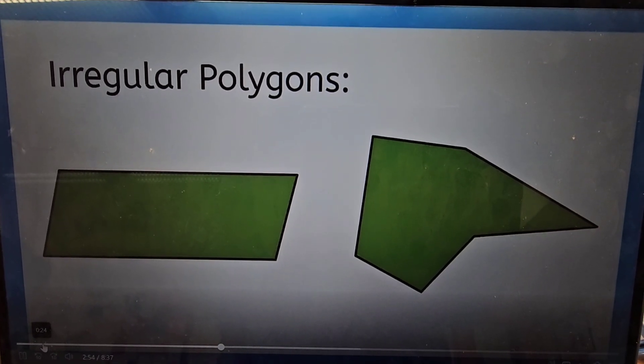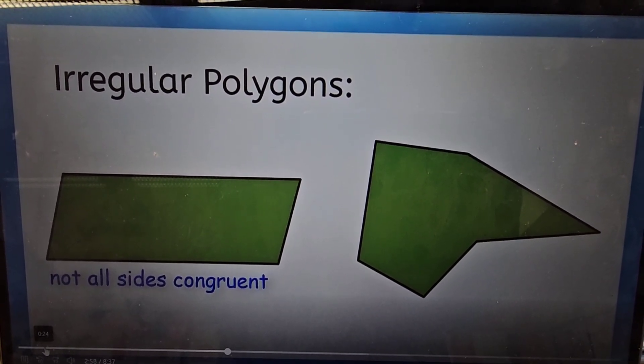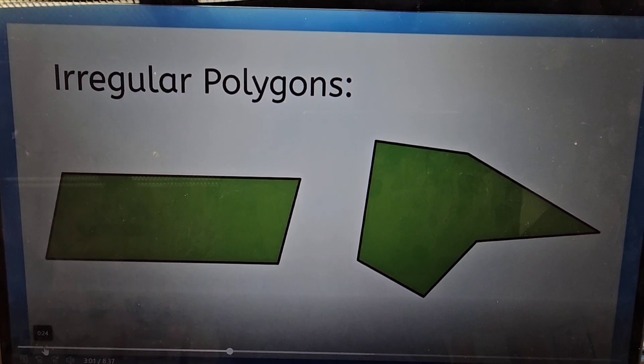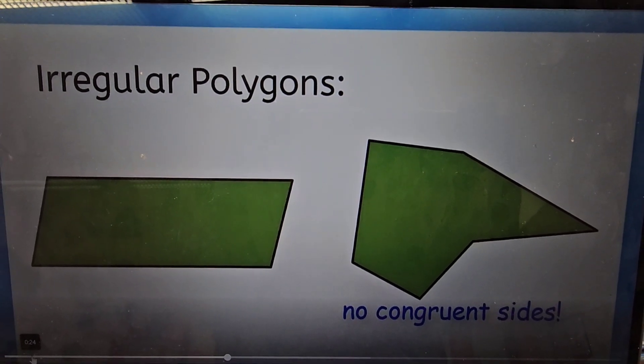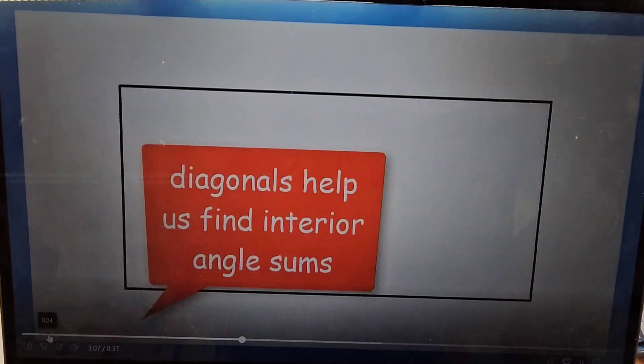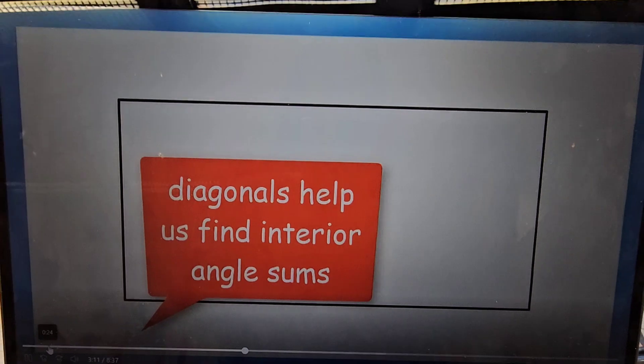This parallelogram is an irregular polygon. It doesn't have four congruent sides and angles. And this hexagon is an irregular polygon. As you can see, the six sides are definitely not all the same length. We can draw diagonals and polygons to help us find the sum of interior angles.